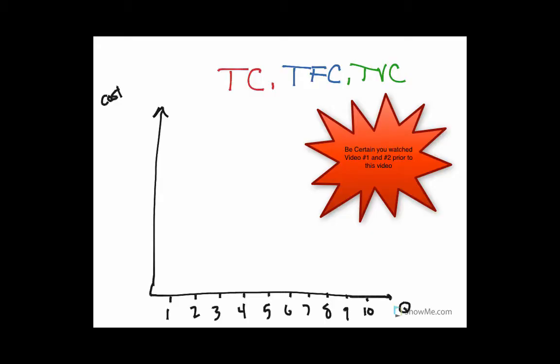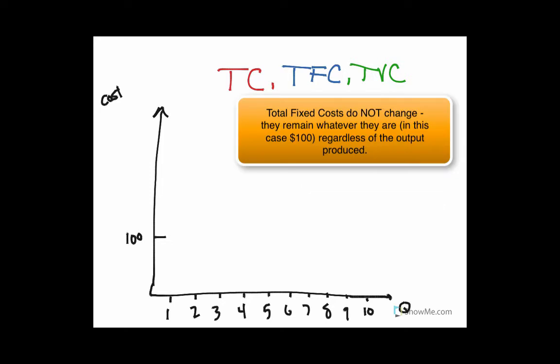I'm going to show you how to graph total cost, total fixed cost, and total variable cost. We're just going to use the number from before for total fixed cost, which was 100. That one's the easiest to draw, so we're going to do that one first. We're just going to say that right there is 100, and it's just a straight line at 100 for all levels of output, because it's fixed.